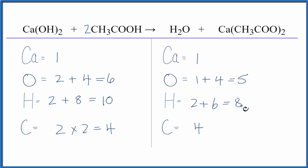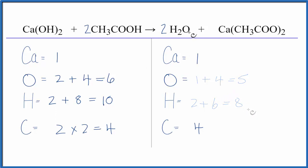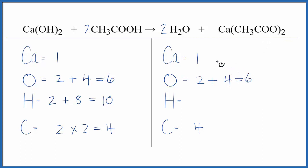I just need two more hydrogens and one more oxygen, and that would balance this. So if I put a two in front of the H2O, let's update our oxygen and hydrogen counts. For oxygen: one times two, plus one, two, times two — so that's four — which equals six. The oxygens are balanced.